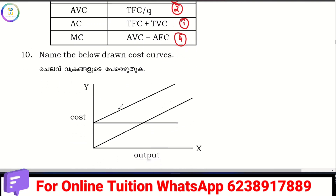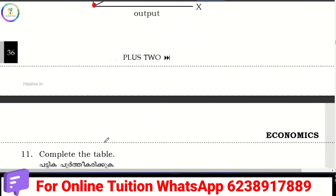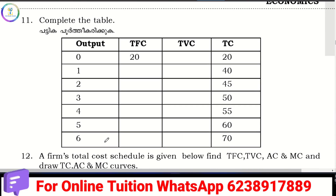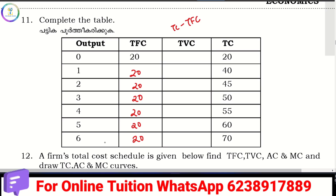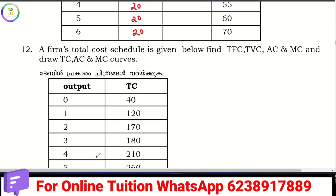Name the below drawn curves. We have three curves. When you are at a parallel point, you will start by TFC. It will be TFC — that is a horizontal line. TVC is TC minus TFC. The total cost schedule shows TFC, TVC, AC, and MC.